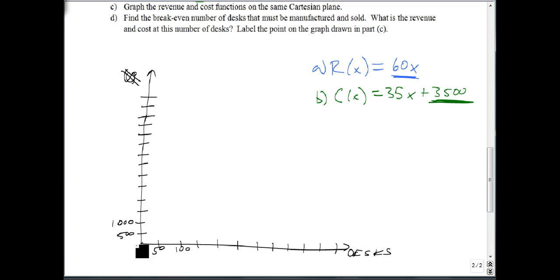But I want to point out, we just graph this like anything else. So we're going to start at $0, 0 for our revenue. If we don't sell any desks, we make no money. If we sell 50, we're going to be up at 1, 2, 3, 4, 5, 6, at $3,000. And if we sell 100, we'll be at $6,000.